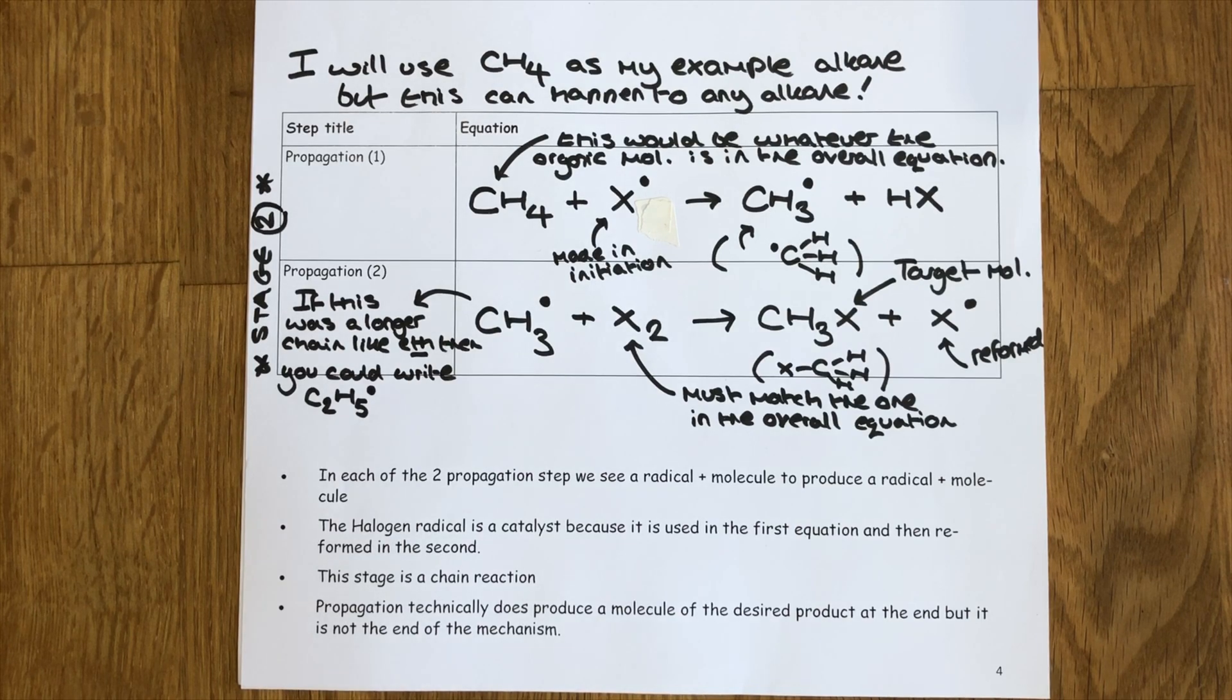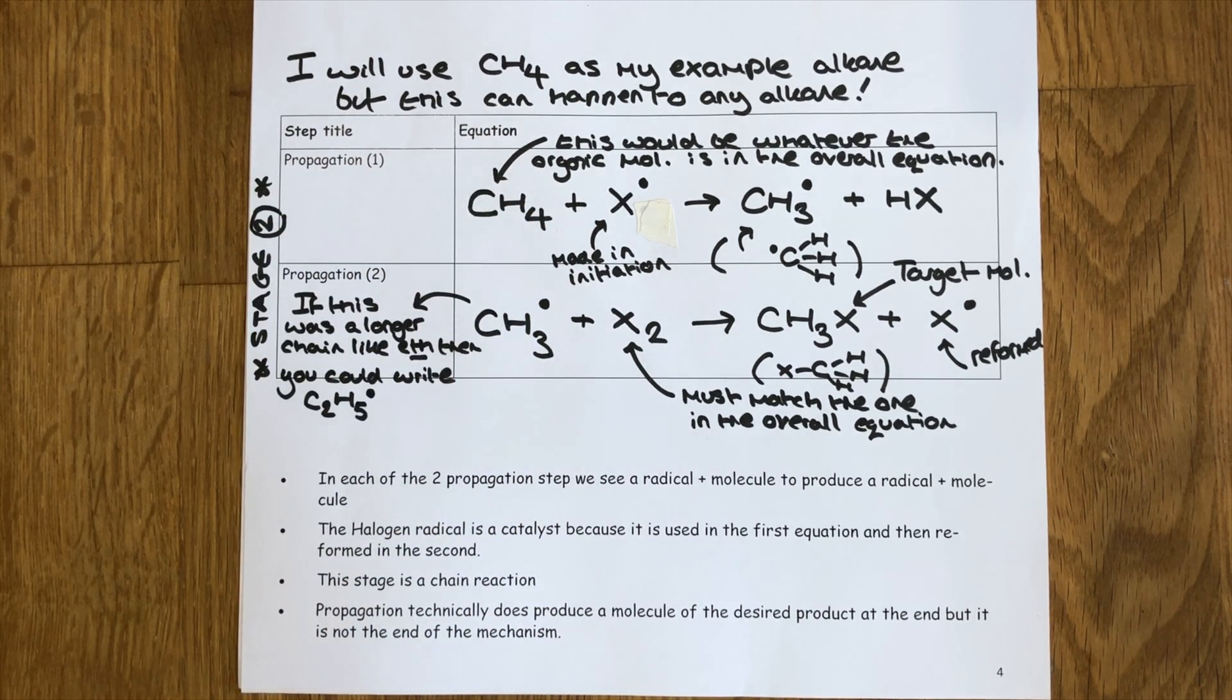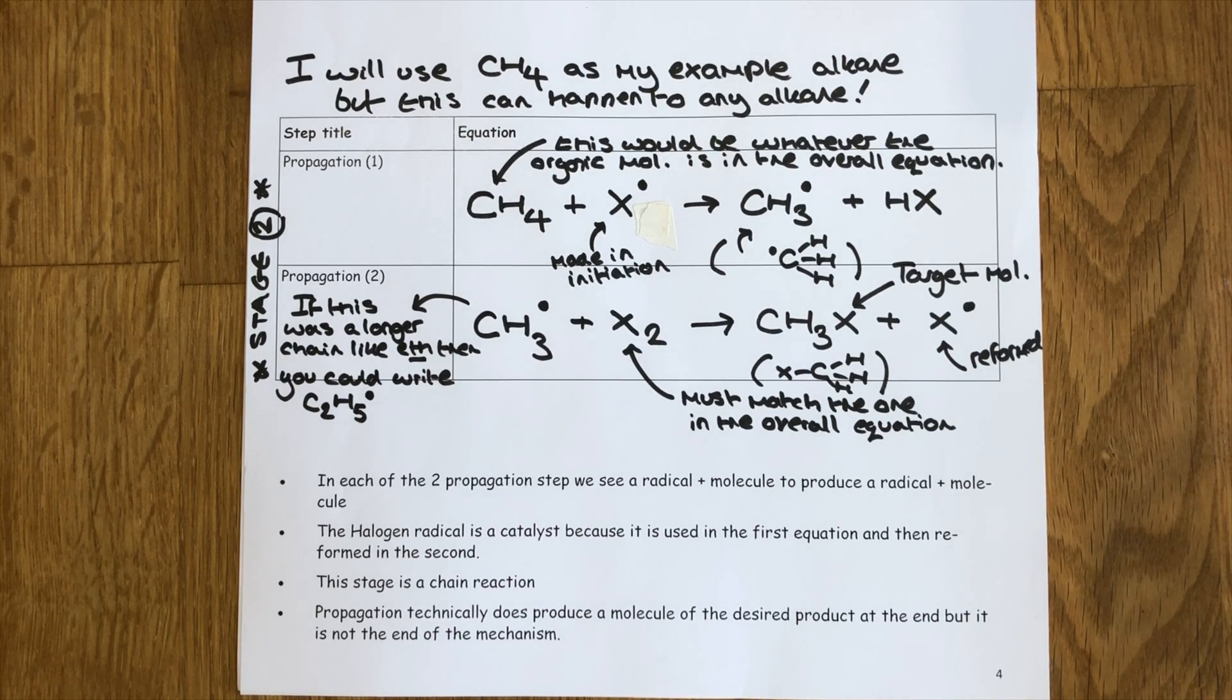Moving into our second stage of the radical substitution mechanism, the X radical that we created in initiation now causes the start of a chain reaction. We call this next stage propagation. Propagation has two distinctive equations which show how the radical goes in and then comes back out again chemically unchanged. This means that the radical is a catalyst in these two equations and you have to be very careful with propagation as it can be quite complicated. I'm using CH4 as my alkane just because it's simple but I could use any alkane here or anything with a CH bond.